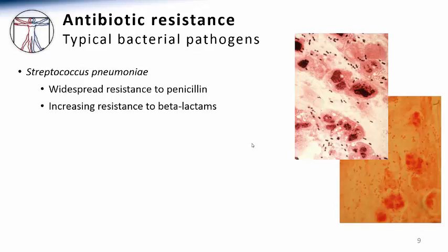For example, Streptococcus pneumoniae, the most common cause of community-acquired pneumonia, used to be predictably susceptible to penicillin. However, over the past few decades, it has developed widespread resistance to penicillin. More recently, it has also demonstrated increasing resistance to other expanded beta-lactams.